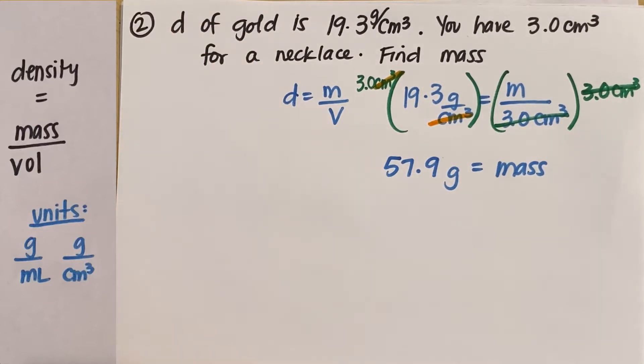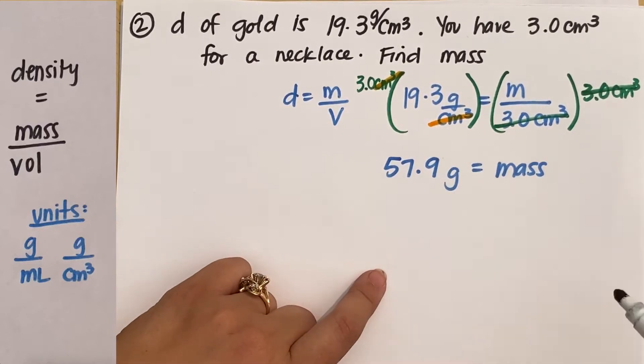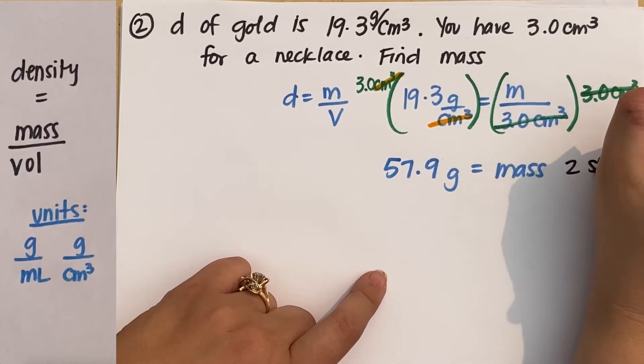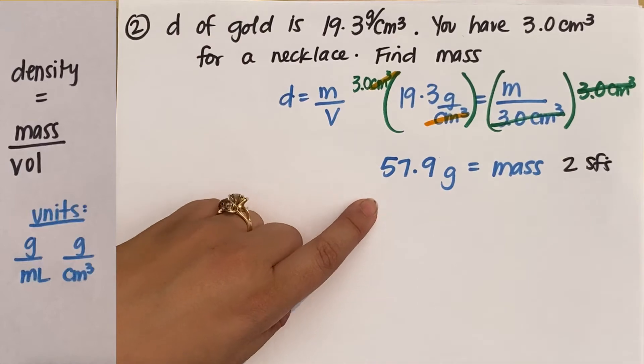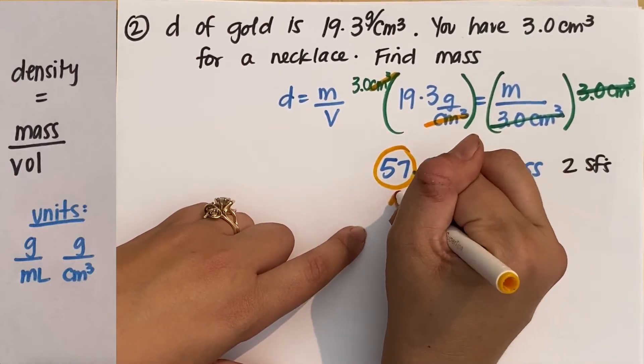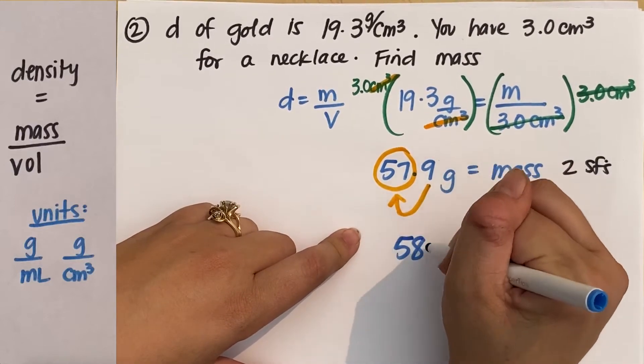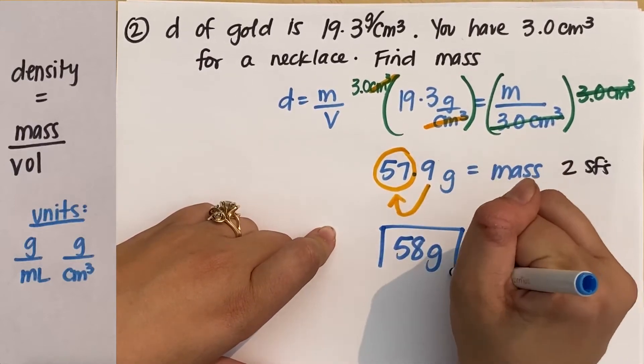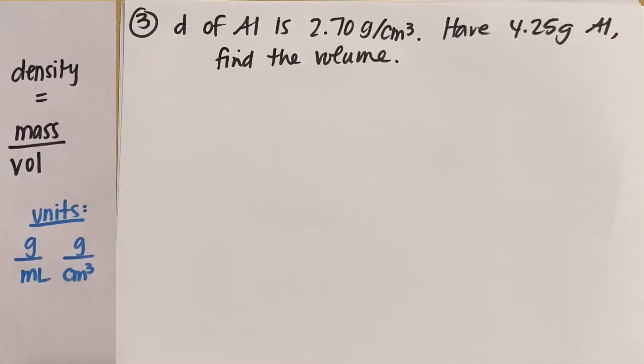Except not quite. If I was going to do this with the correct amount of sig figs, this has three sig figs, this has two sig figs. So my answer needs to have two sig figs. So 57.9, I can keep the 57. The nine is going to make the seven round up. So I should get 58 grams as my answer.